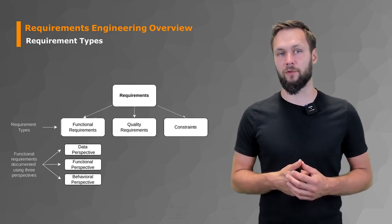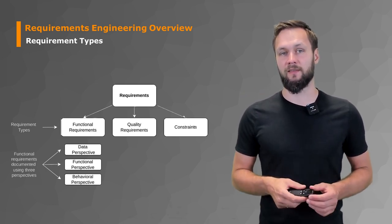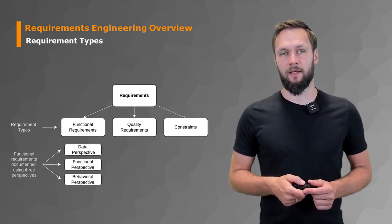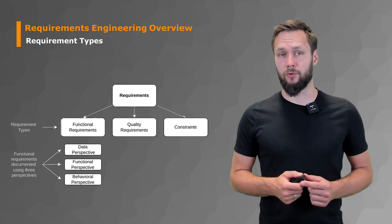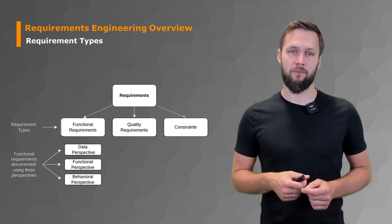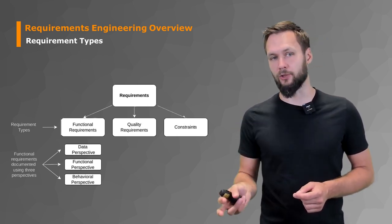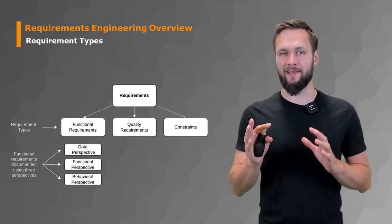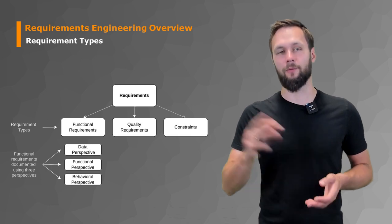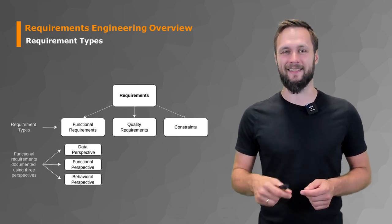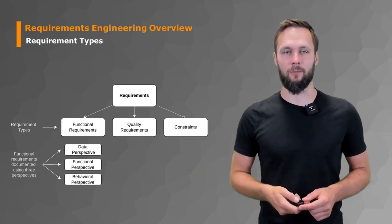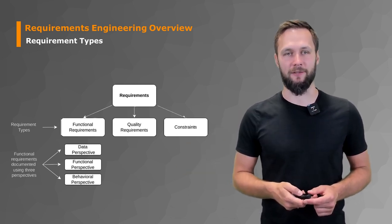First, functional requirements. Second, quality requirements. And third, constraints. Functional requirements are often documented using three perspectives: data perspective, functional perspective, and behavioral perspective. Don't worry if this seems random and not really intuitive for now. We'll go into detail in the next slide, and it will become more intuitive throughout the lecture, especially when we're talking about the elicitation and documentation phase.